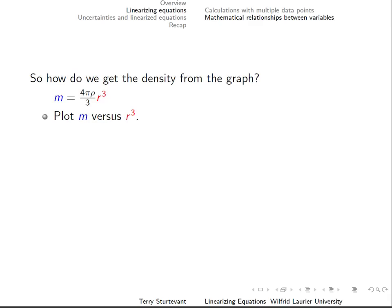Since the slope should be 4 thirds pi times the density, the density should be just 3 times the slope over 4 pi. The density comes just from the slope. Mass and radius are gone.